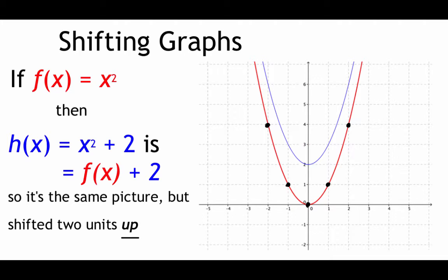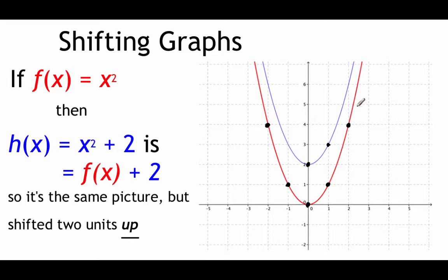Let's look at this example. We're given f of x as x squared, and h of x equals x squared plus 2. The x squared piece is just our parent function f of x, but we've got this plus 2 on the end. So we take this parabola drawn in red and shift it up two units to get h of x. The ordered pair 0, 0 goes up two units, matching the blue graph. The point 1, 1 goes up two spaces, and all points are just shifted up two spaces from where they started.